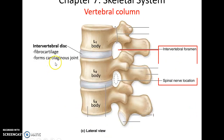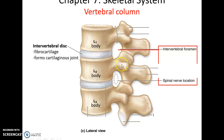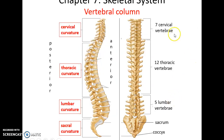Looking closely at how vertebrae come together, there is a cartilaginous joint made of fibrocartilage attached to neighboring vertebrae. When two vertebrae come together, they form the intervertebral foramen on the lateral sides that allow spinal nerves to pass through.